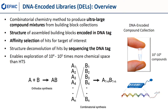Everyone is familiar with orthodox or traditional synthesis. Two molecules here represented as A and B — for example a carboxylic acid and an amine — are reacted in amide bond forming conditions to form a new molecule, in this case an amide.